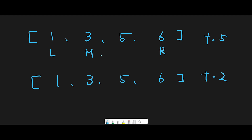The middle number is less than the target, which means the target should be on the right side of the middle number because the input array is sorted. So we move the left pointer to middle + 1. Now the middle pointer is (2 + 3) / 2 = 2. Check if the middle number equals the target — they are the same, so we return the middle pointer, which is index 2. That's the first case.